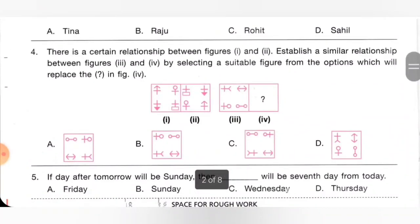Fourth one: there is a certain relationship between figures 1 and 2. Establish a similar relationship between figures 3 and 4 by selecting a suitable figure from the options which will replace the question mark in figure 4. In figure 1, the top left corner figure is given as the bottom right corner in the second figure — top left becomes bottom right. By comparing this relation, option A is the correct answer.